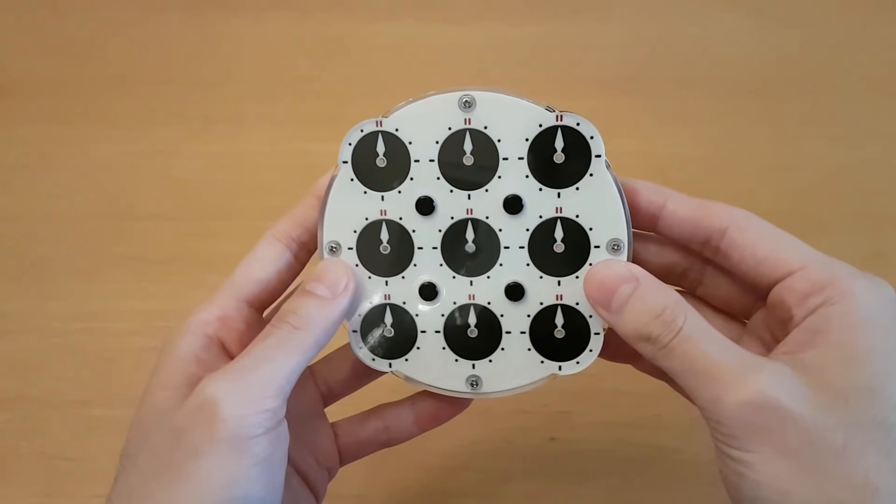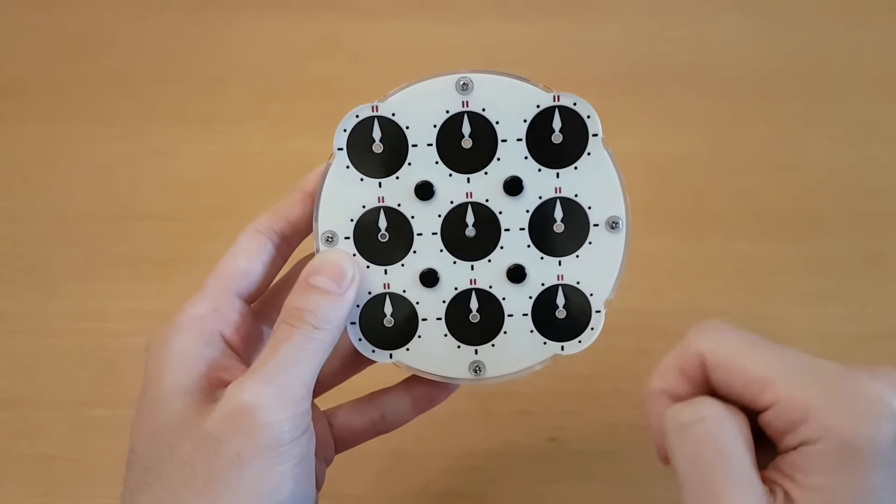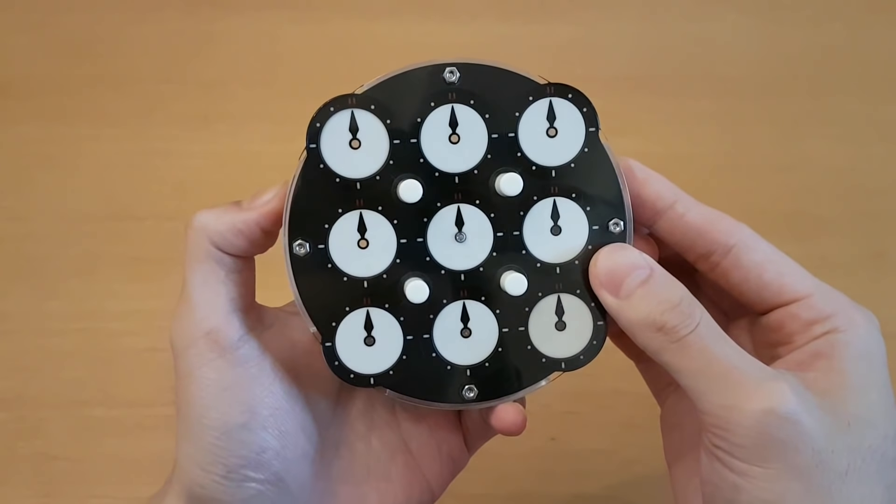The Rubik's clock is a very easy puzzle to learn, and the goal is to get all of the clocks to point upwards on both sides.